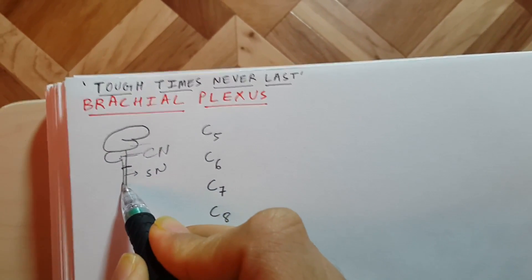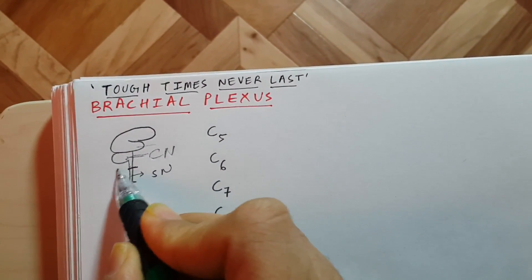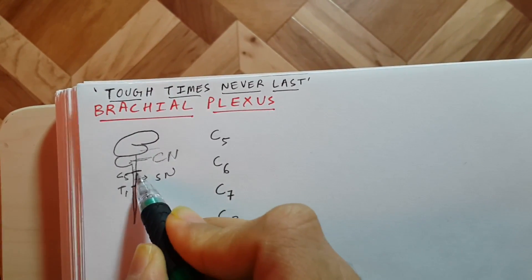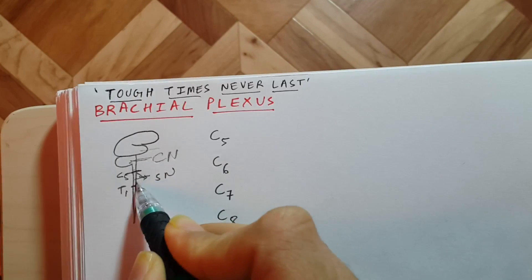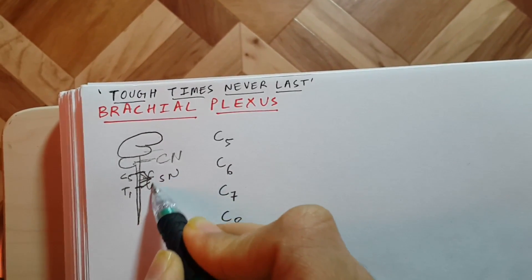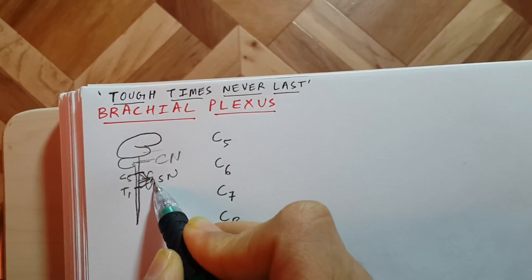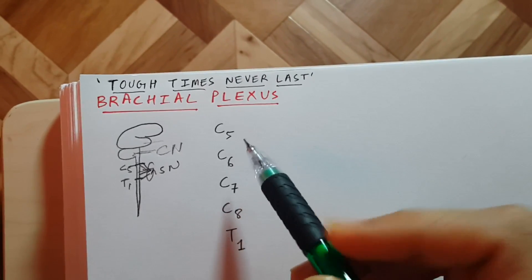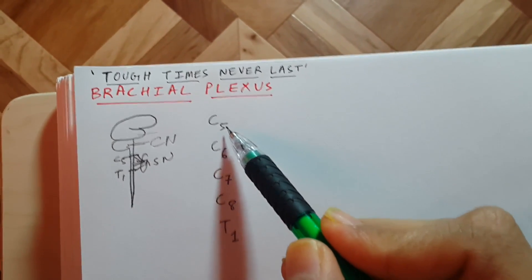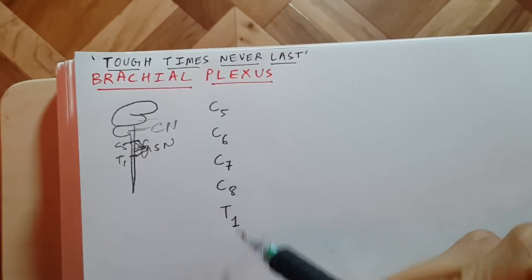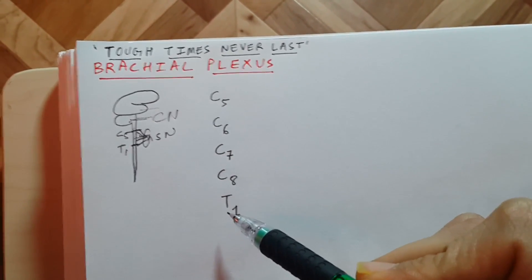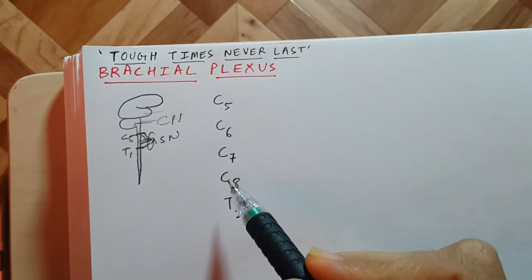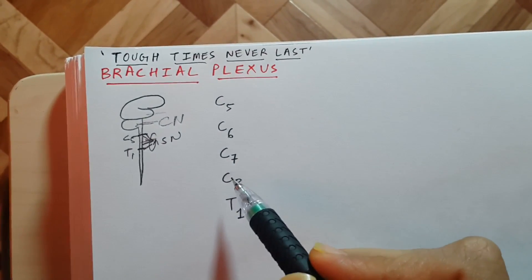The spinal nerves coming out from the level of the spinal cord from C5 to T1 form a network of spinal nerves which is called the brachial plexus. So brachial plexus is basically the spinal nerves coming out from C5 to T1. I made a small story to help you remember it in an easier way.